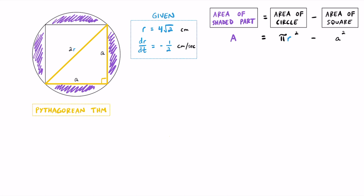Using the Pythagorean theorem, a² plus b² equals c², where c is the hypotenuse. Both legs of the right triangle are side a of the square, and the hypotenuse is 2r. So we get: a² plus a² equals (2r)², which simplifies to 2a² equals 4r².